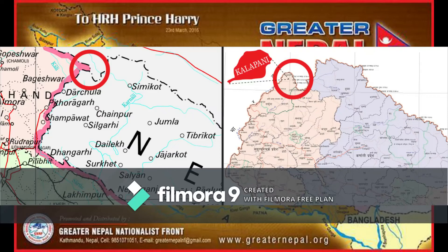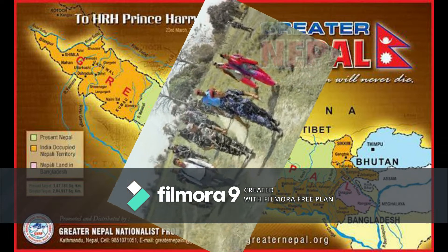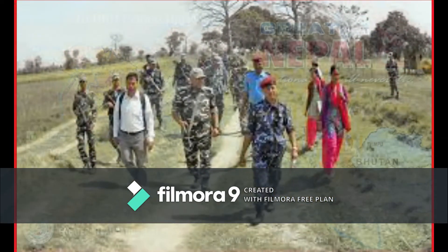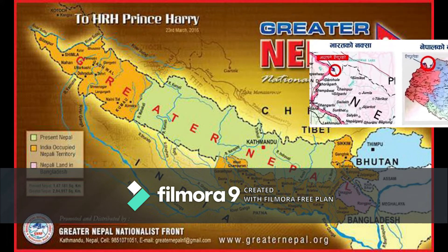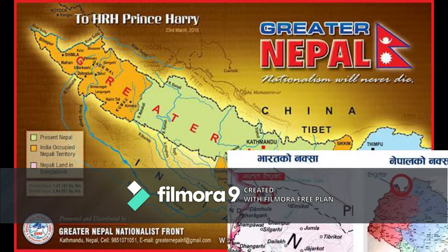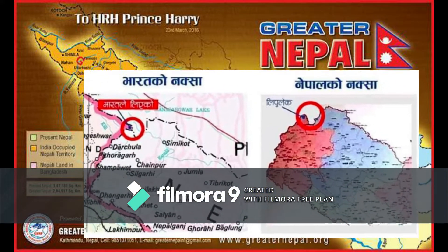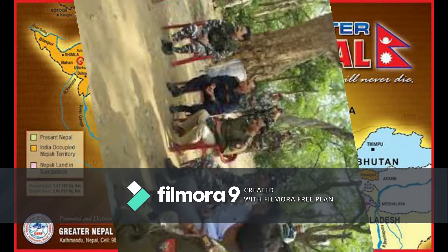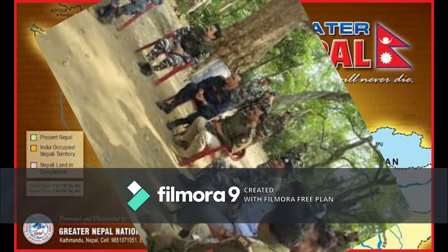The territorial disputes between India and Nepal include Kalapani, approximately 400 square kilometers at the India-Nepal-China trijunction in western Nepal, and Susta, approximately 140 square kilometers in southern Nepal.